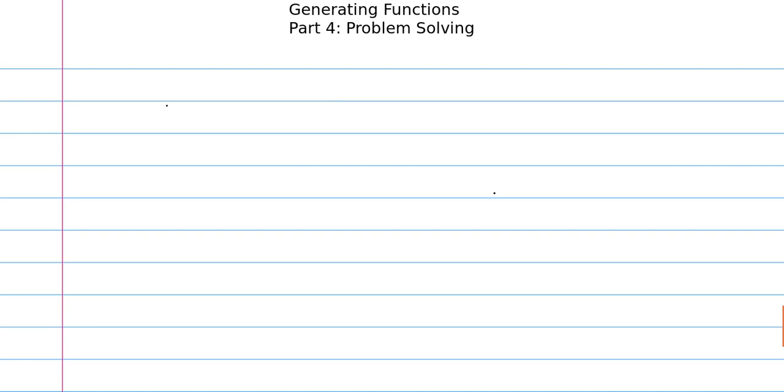So first I want to offer you a summation problem, and that is the infinite sum, as n goes from 0 to infinity, of the nth Fibonacci number divided by 2 to the n.